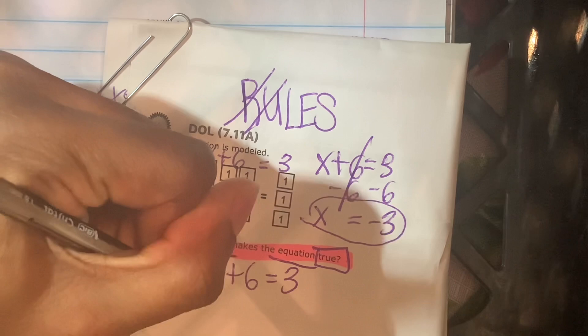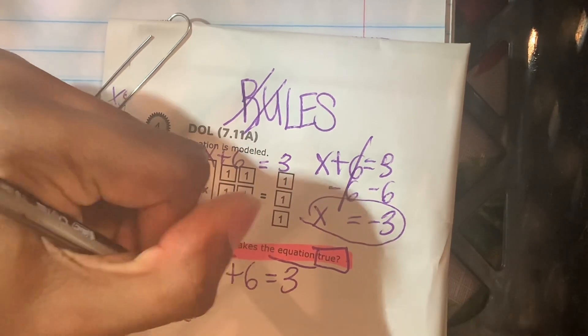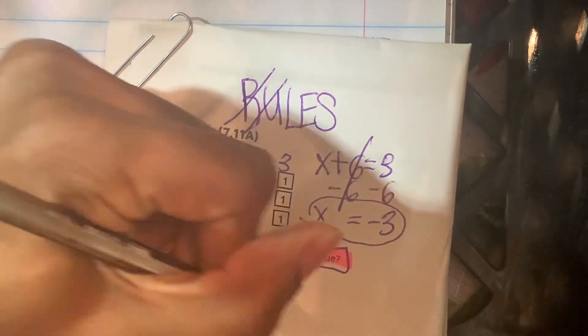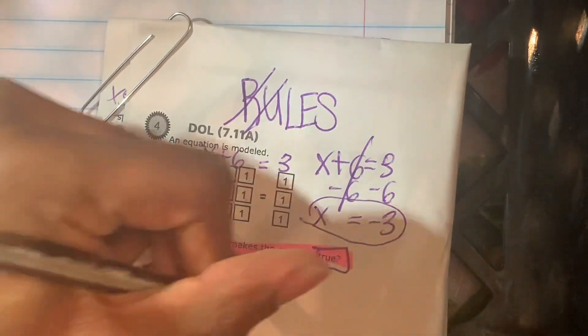Well, if x is equal to negative 3, we can replace this x with a negative 3 plus 6 is equal to, what's negative 3 plus 6?